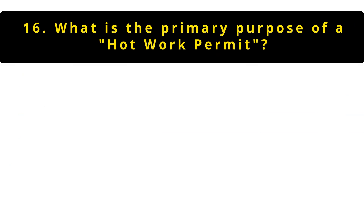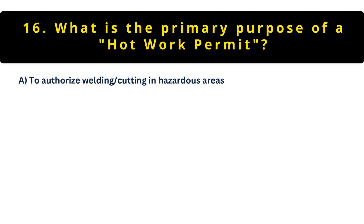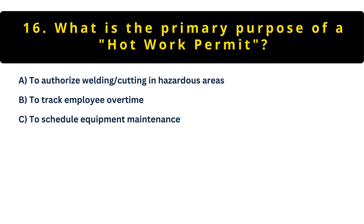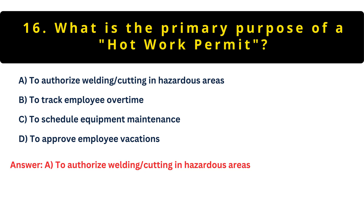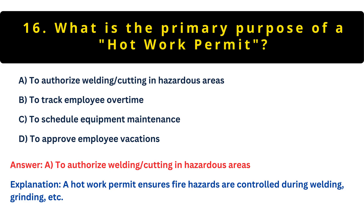Question 16: What's the primary purpose of a hot work permit? Option A: To authorize welding in hazardous areas. Option B: To track employee overtime. Option C: To schedule equipment maintenance. Option D: To approve vacations. The correct answer is A — to authorize welding in hazardous areas. Hot work permits are critical for controlling fire risks during activities like welding or grinding. They ensure proper precautions are taken before sparks start flying in potentially dangerous environments.